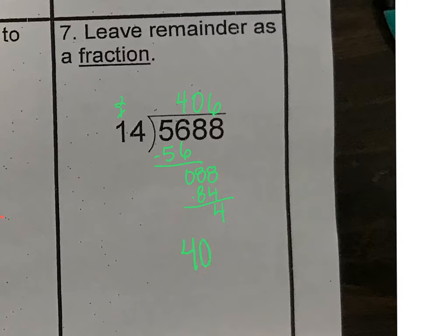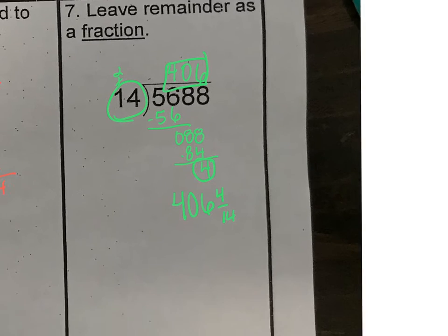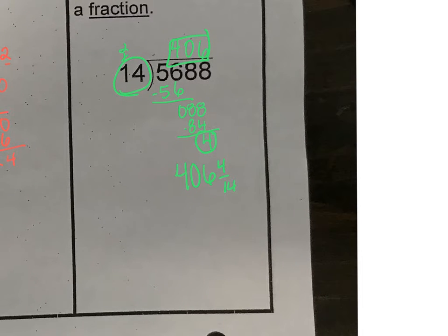And then we put our, what we have right here, and then we put our remainder, which is 4, over our original denominator, which is 14. So we can reduce that because it's divisible by 2, so 406 and 2 sevenths.